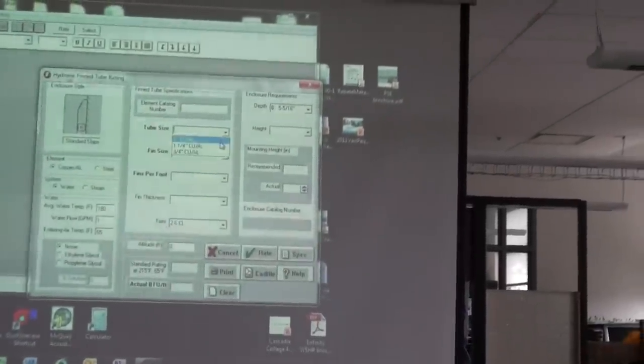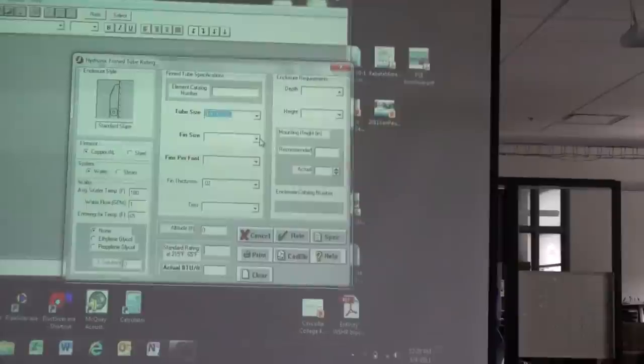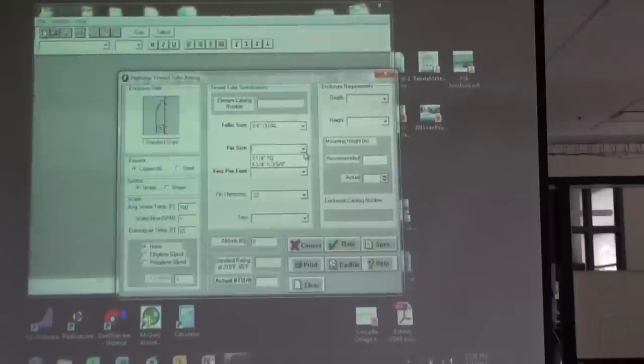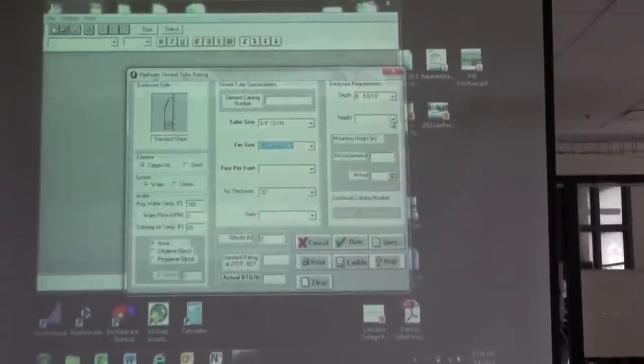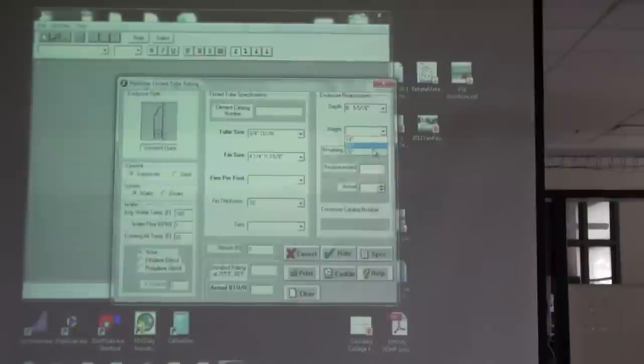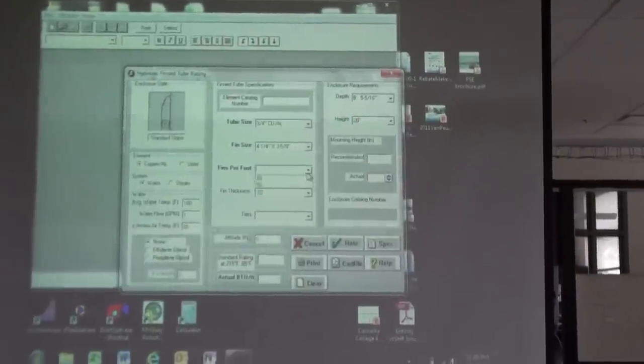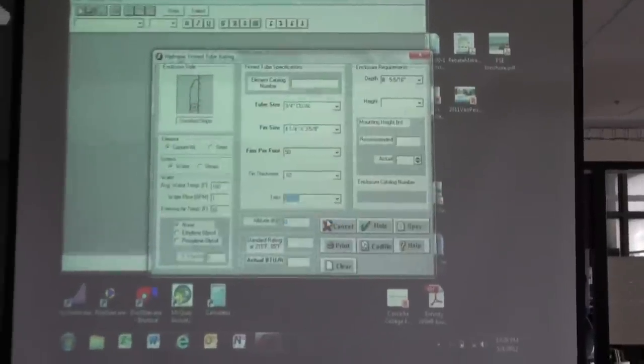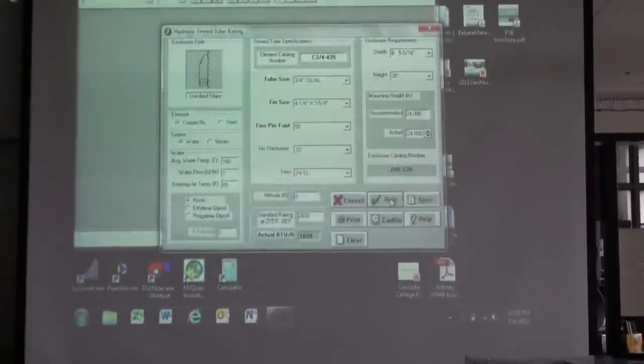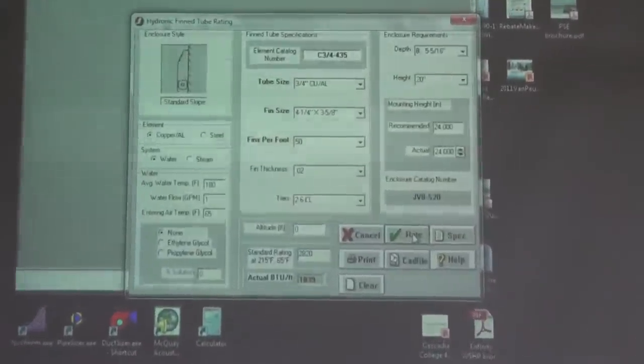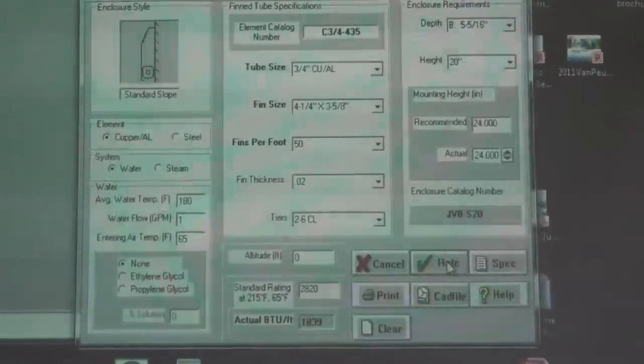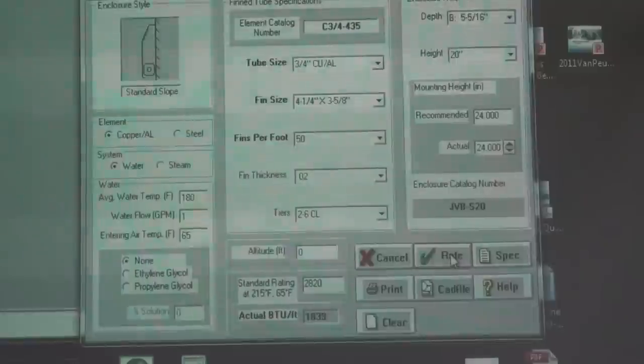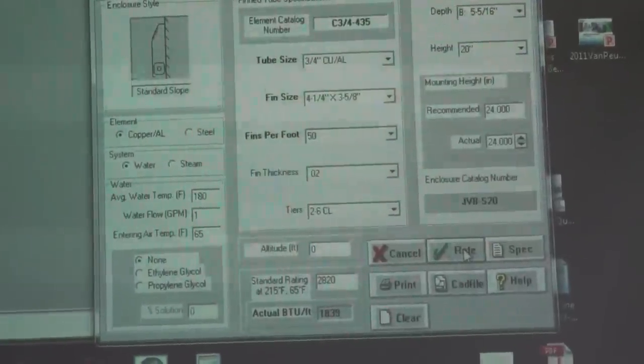I'll just use a three-quarter inch tube. One inch tubes are too big to get as much heat transfer. Use a fairly large element with maximum pin count, throw in those two tiers, I'll rate it. Just over 1800, 1800 BTUH per linear foot.